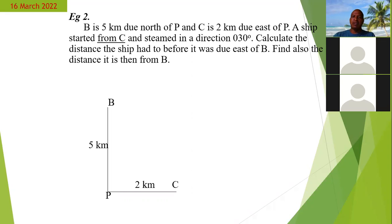And then now we want to move from C at a bearing of 30 degrees, so we construct a north line at C. Then we estimate our angle of 30 degrees. The ship now has to move to a point where it becomes east of B, so let's say it will be at point D when it is east of B.